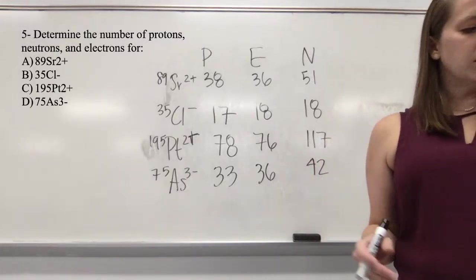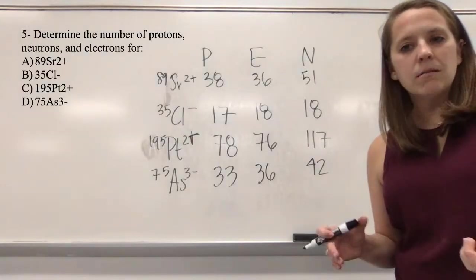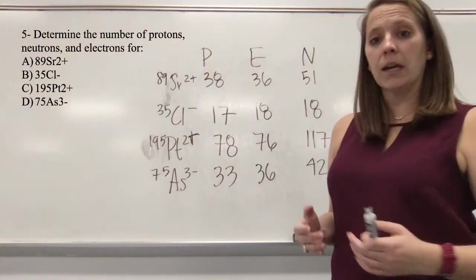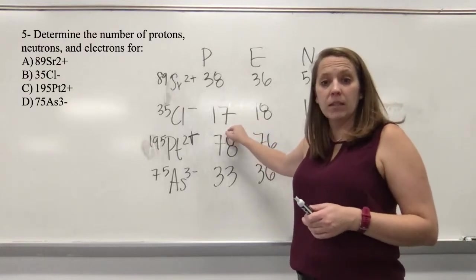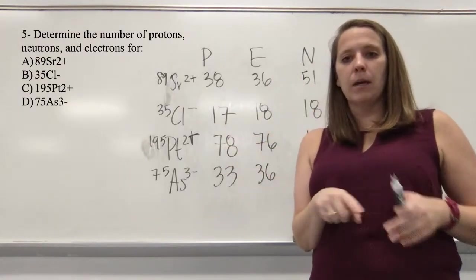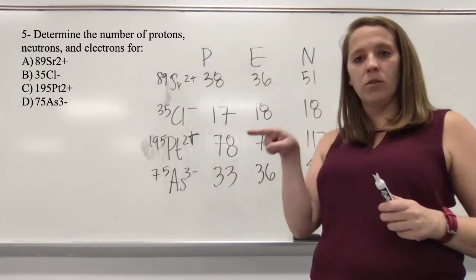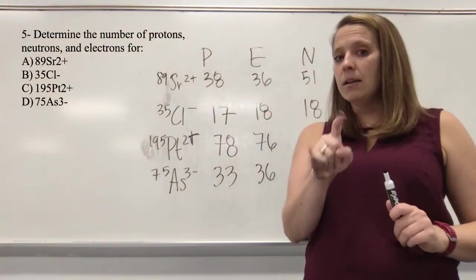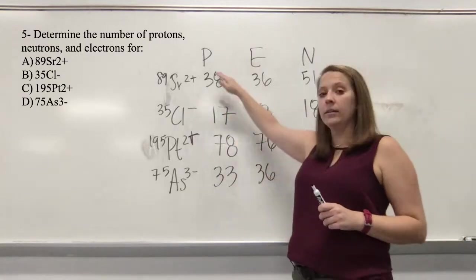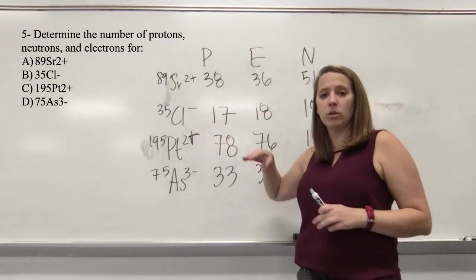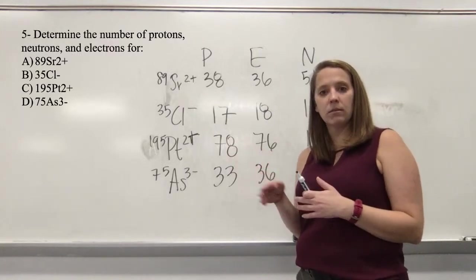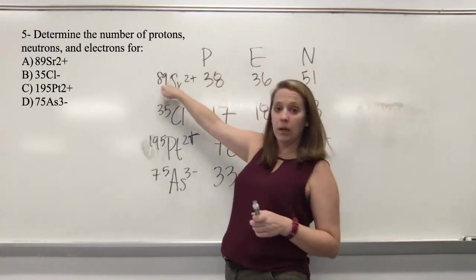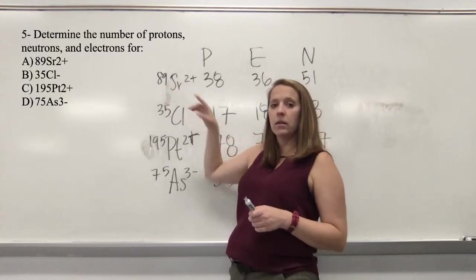The trick is to find the element on the periodic table. The atomic number — the whole number that increases from 1 to 118 — is the number of protons and electrons in a neutral atom. If it is an ion, you either add or subtract electrons. The number of neutrons is the mass number minus the number of protons. If I didn't give you the mass number, you could calculate it: mass number = protons + neutrons.